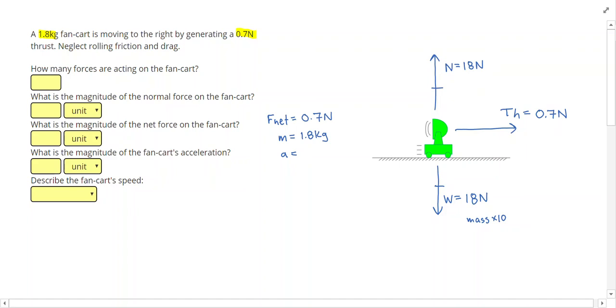Alright, lastly I can use Newton's second law to find my acceleration. So my acceleration will be my net force divided by my mass, so 0.7 divided by 1.8. And that gives me an acceleration of 0.389 meters per second squared. The units come out to meters per second squared because a Newton is the amount of force required to accelerate one kilogram at one meter per second squared.